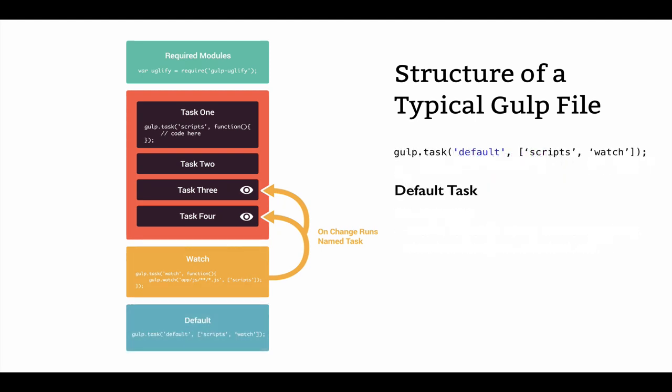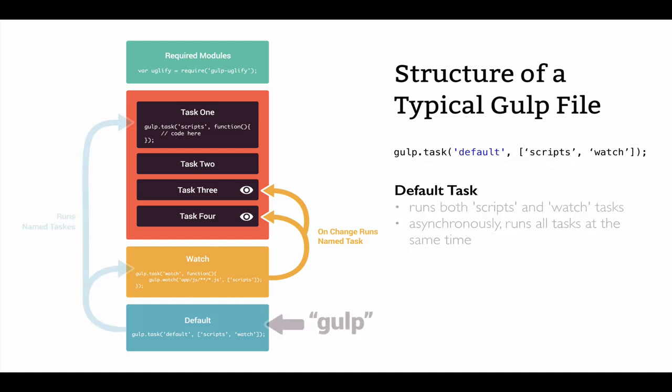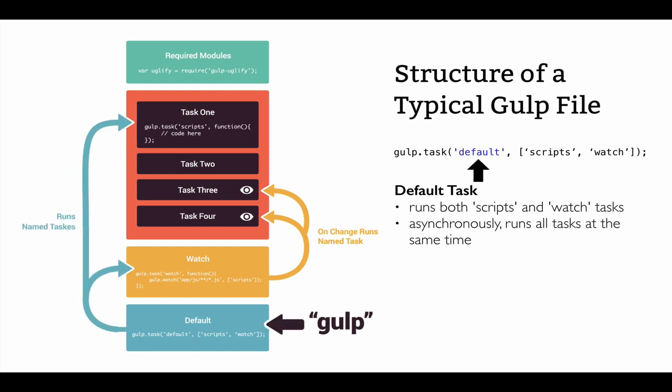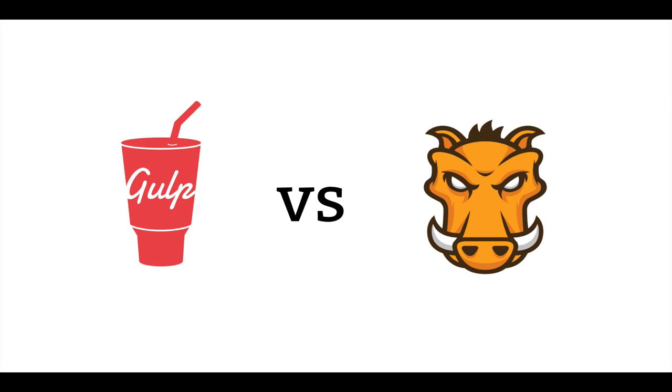The last task you'll typically encounter is called the default task. You can think of the default task as the task that kicks off all the other tasks. When you run the command 'gulp' in your terminal, it runs the default task, which holds an array of named tasks. These all fire off asynchronously, so they're all happening at the same time. This is the default behavior, but it can be overridden if you need things to fire in a specific sequence — and we'll actually do that in an upcoming video when we do our final build.